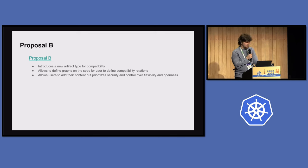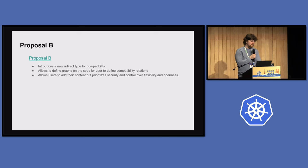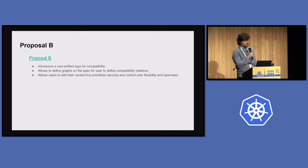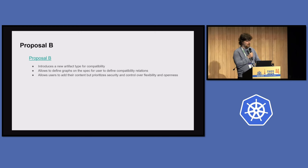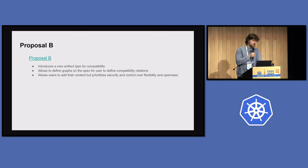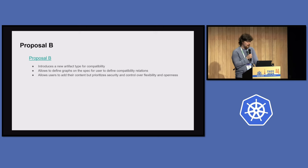Also related to Proposal B is the idea of having one centralized repository where different organizations can contribute their own compatibility fields. For example, a telco organization could contribute its own attributes — like whether SR-IOV is enabled on the host — and implement plugins to check that. The repository is centralized for security and control flow, since some checks may require root permissions. Organizations bringing their own plugins would also provide AppArmor or SELinux profiles to control what happens there.